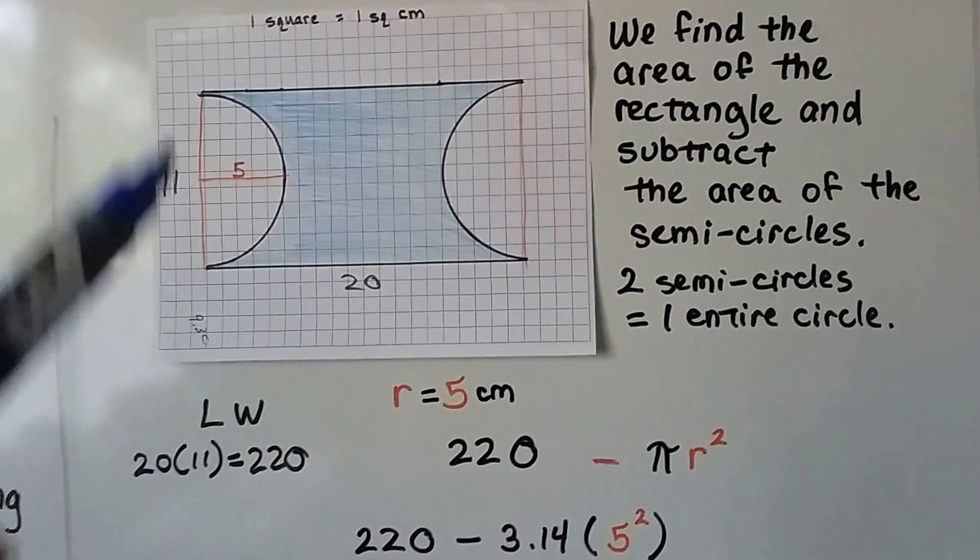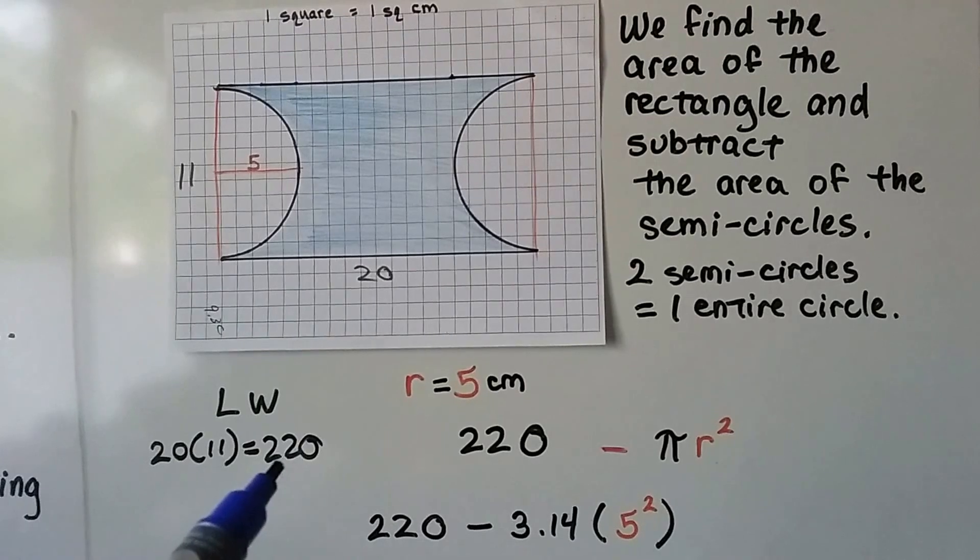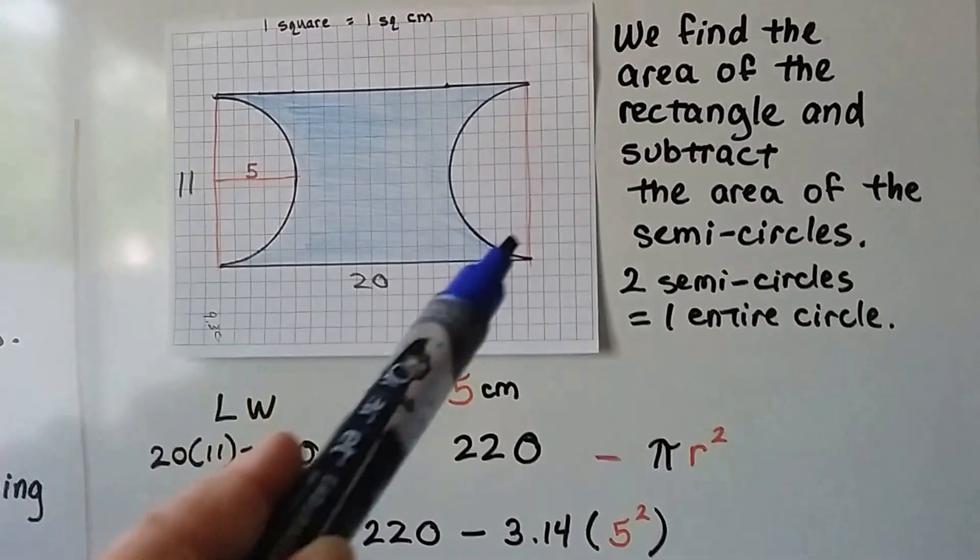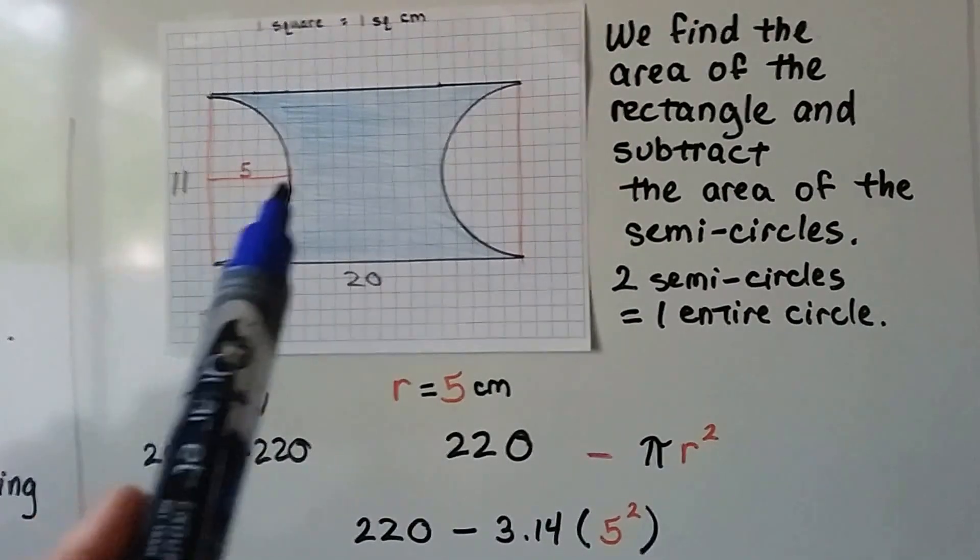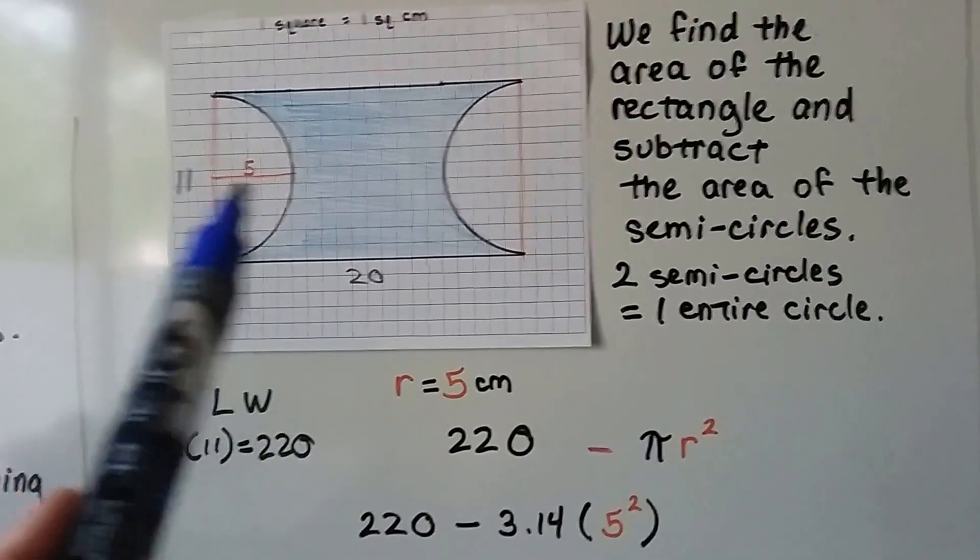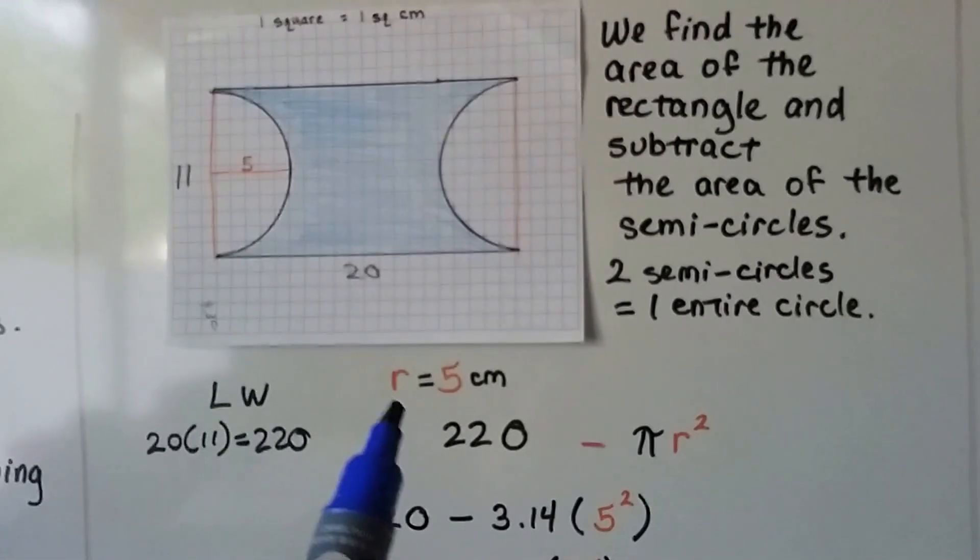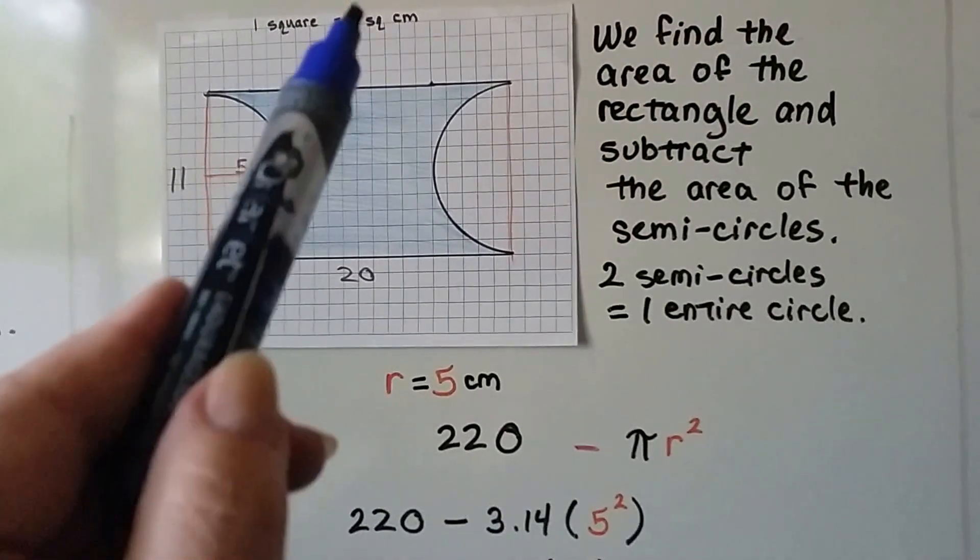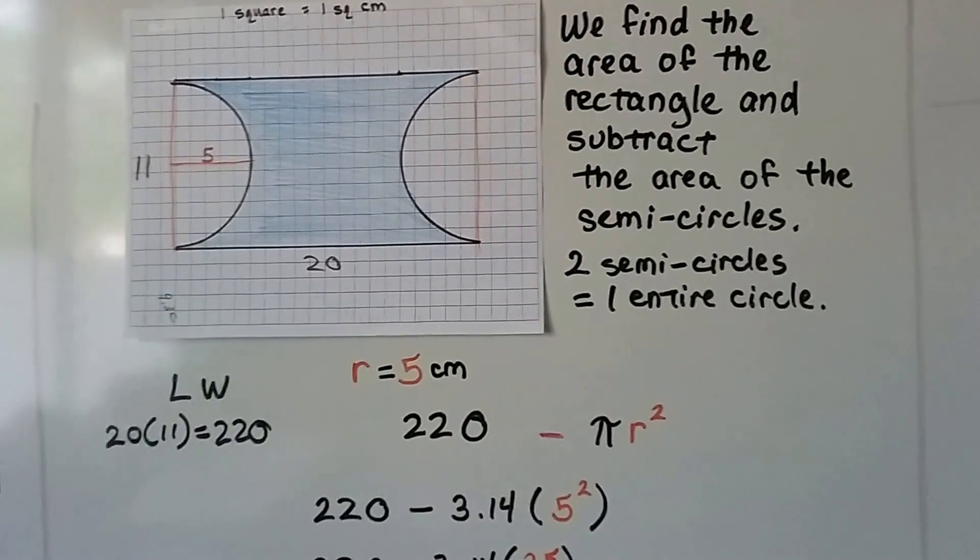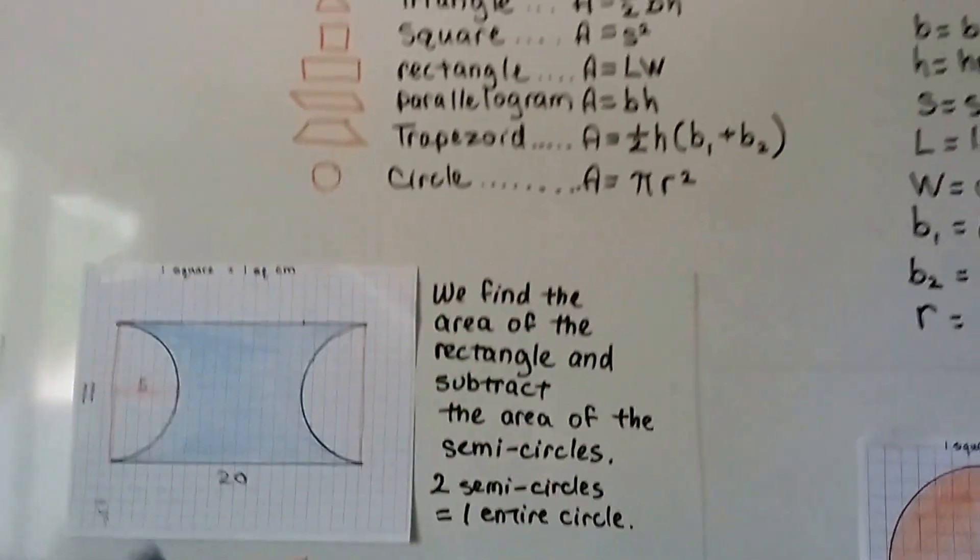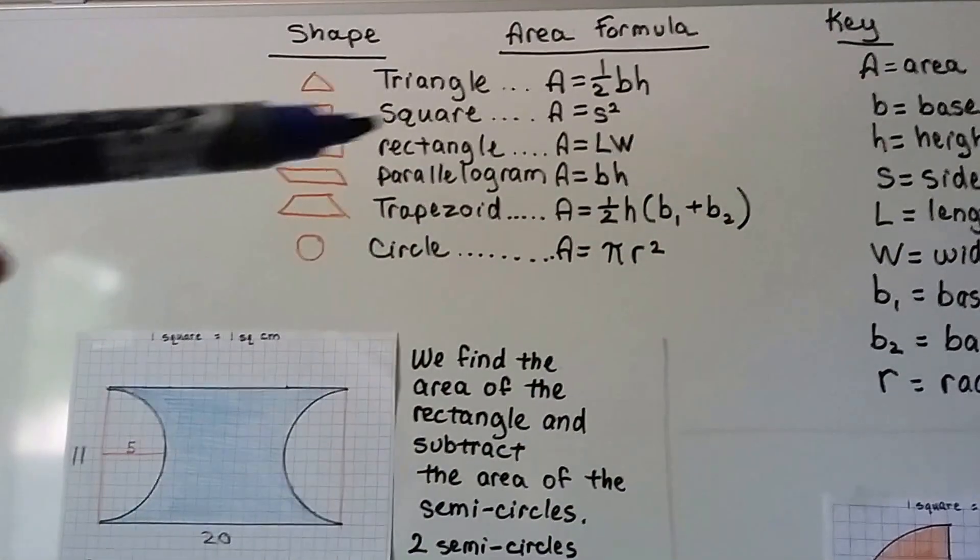We've got a length and width here—20 and 11. When we multiply them, we get 220, so that's the area as if this was all filled in. We can also see that the radius is 5 units. We're saying that one square is a centimeter, so the radius is 5 centimeters.